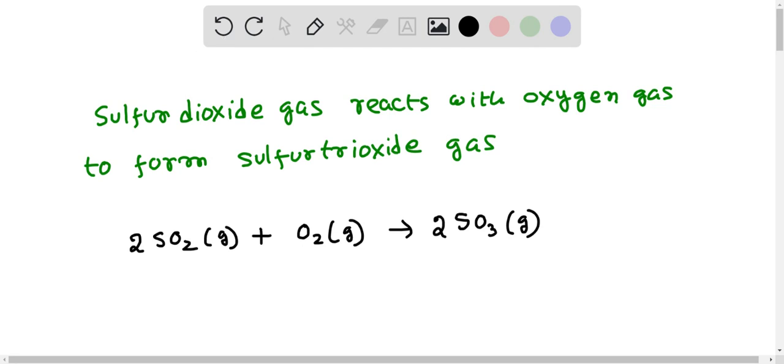So this is the balanced equation for the reaction between sulfur dioxide gas and oxygen gas to produce sulfur trioxide gas.